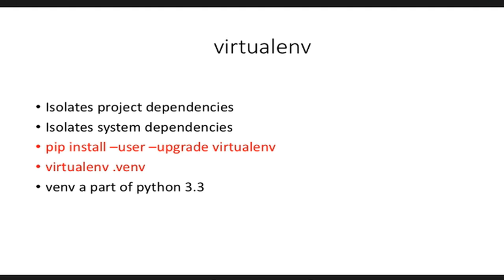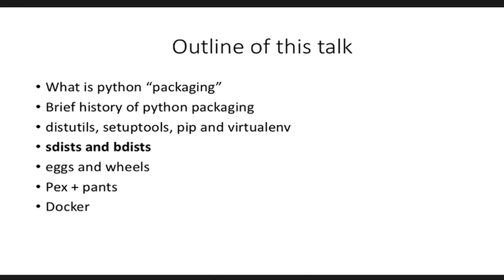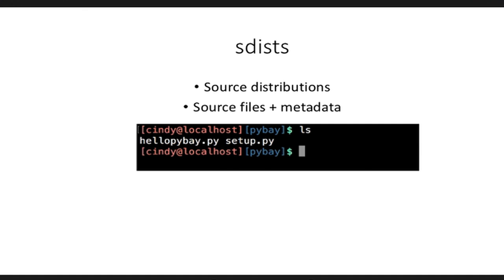Now let's talk about sdists and bdists. Every time you run pip install something, you probably see a whole bunch of text spitting out. If you stop to look at what's happening, you might see words like sdists and bdists. So you have your Python package that you want to ship to other users — you either want to upload it to PyPI or distribute it within your company. One way of doing it is using source distributions. Source distributions essentially just comprise your source files — all your Python files — as well as some metadata about these files.